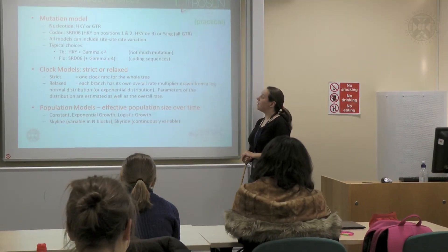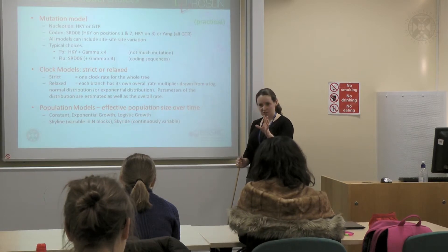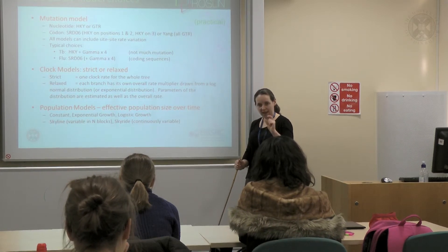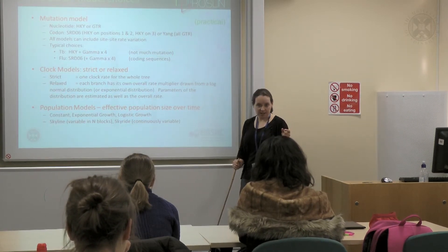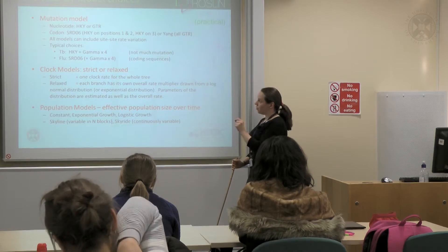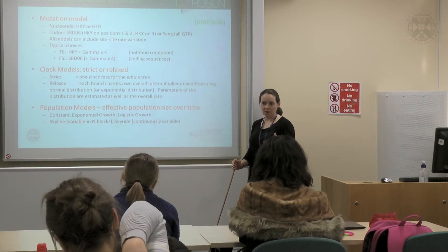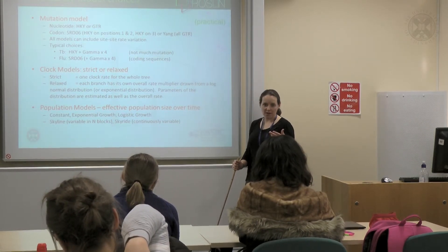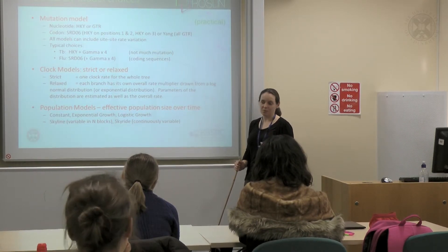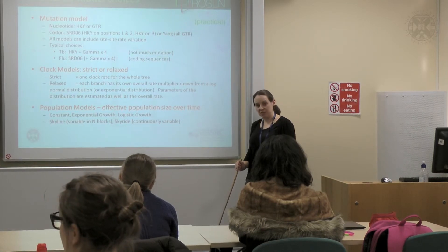The next model is the clock model. The mutation model just describes A to G, C to T rates. The clock model gives you the overall average number of substitutions per site per year.